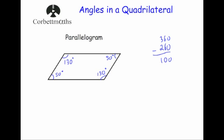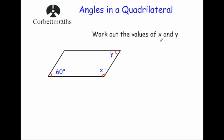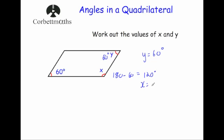Let's look at a typical question to do with parallelograms: work out the values of x and y. First, the opposite angles are equal, so if one angle is 60 degrees, y is also equal to 60 degrees. To find x, the acute and obtuse angles add to 180 degrees, so we take 60 away from 180, giving us 120 degrees — so x equals 120 degrees. Alternatively, we could have added the two 60s to get 120, taken that away from 360, and halved it to get x.